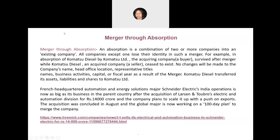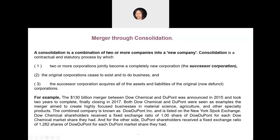Now let's define merger through consolidation. Here, two or more companies merge together to create an entirely new entity. Consolidation is a contractual and statutory process by which two or more corporations jointly become a completely new corporation — what we call a successor corporation. The original companies will no longer exist, and the new company acquires all the assets and liabilities of the earlier companies.